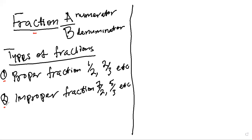So types of fractions: we have proper fraction and we have improper fraction. A fraction is said to be proper whenever the numerator is lesser than the denominator. Because what we have here, you see one is lesser than two — so that's why it's called proper fraction.